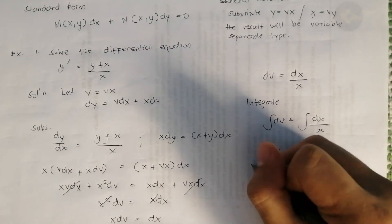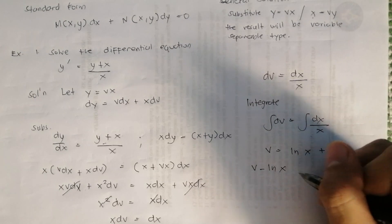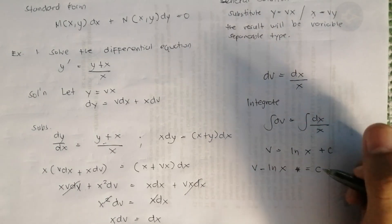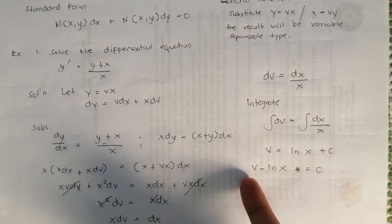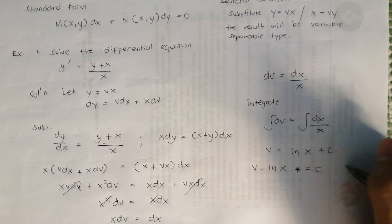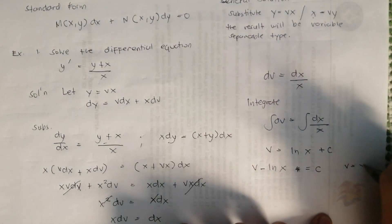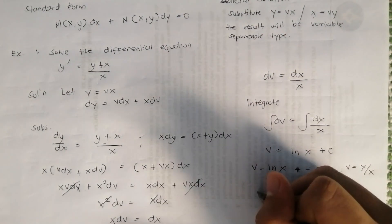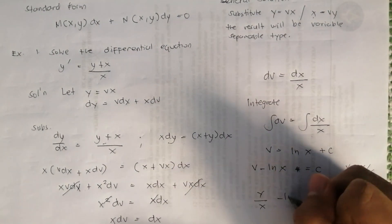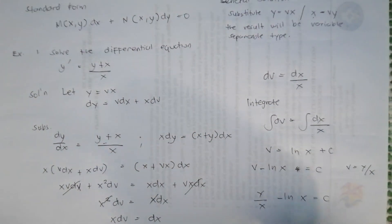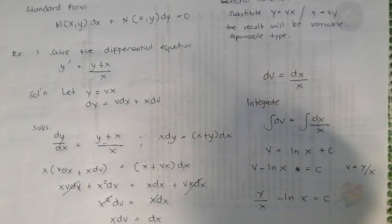Integrating both sides: integral of dv equals integral of dx over x, which gives v equals ln(x) plus c. Rearranging: v minus ln(x) equals c. Substituting back v equals y/x, the final answer is y/x minus ln(x) equals c.